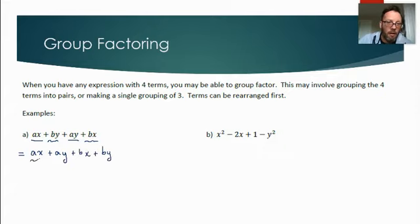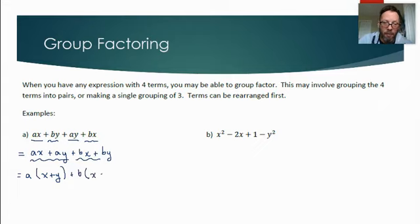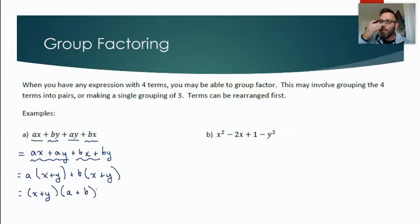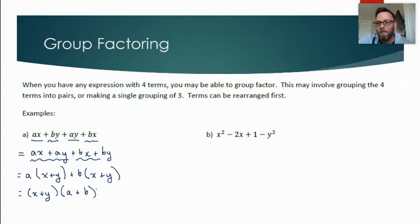Now I can common factor each pair: from the first pair I take out a and I'm left with (x + y); from the second pair I take out b and I'm left with (x + y). Those two parts have a common binomial factor of (x + y). Removing it leaves a from the first part and b from the second, giving (x + y)(a + b).